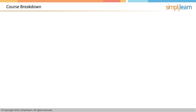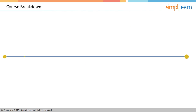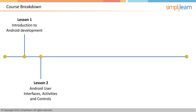Here is the course breakdown. You have 10 lessons. Lesson 1 will be an introduction to Android development, in which you will learn how to set up the environment and understand the architecture of Android. Lesson 2 is more about Android user interfaces, activities, and controls — you will be able to use controls, add validation, and apply basic programming skills to develop an Android user interface. Lesson 3 is all about layouts and controls.